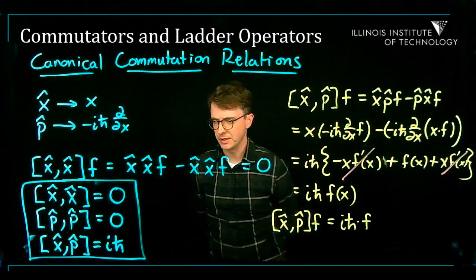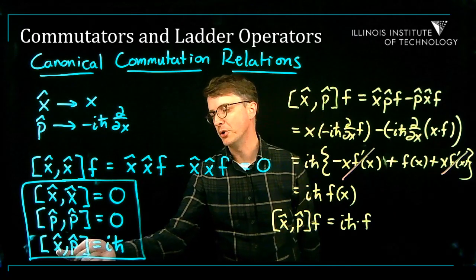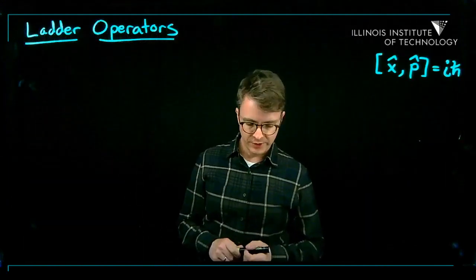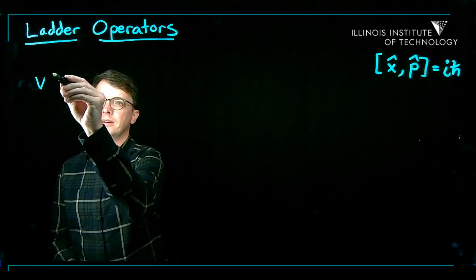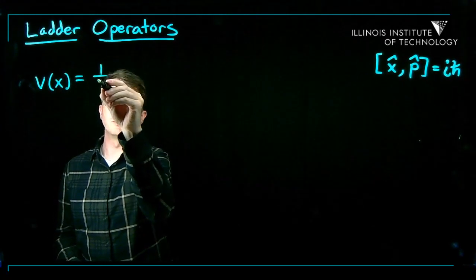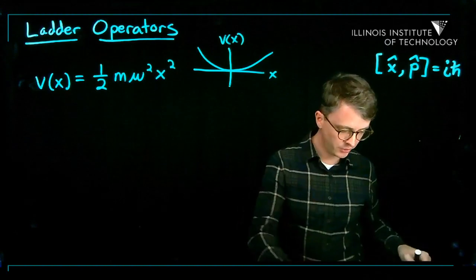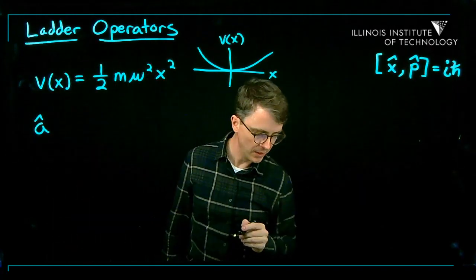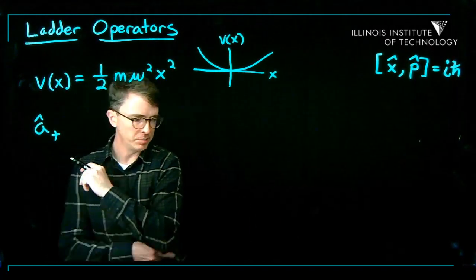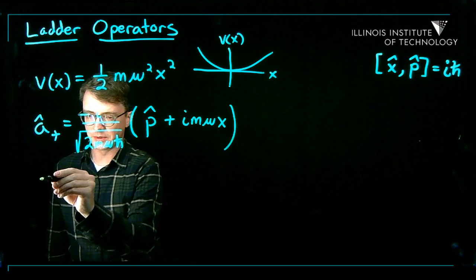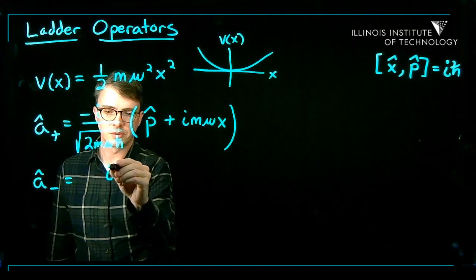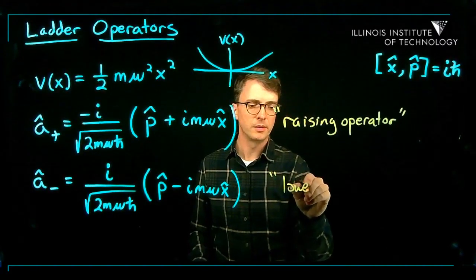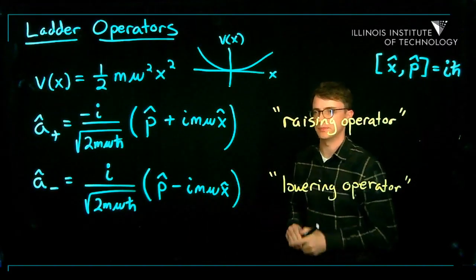This has a connection to the uncertainty principle — basically, you can't know both position and momentum simultaneously because of this commutator. Now I want to introduce the ladder operators. I'll define a-hat-plus, the raising operator, and a-hat-minus, the lowering operator — combinations of x-hat and p-hat. We'll explain why they're useful shortly.